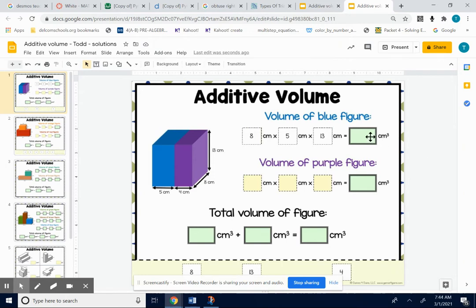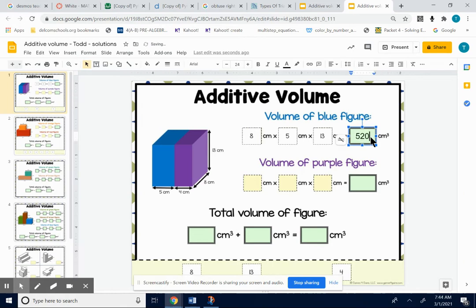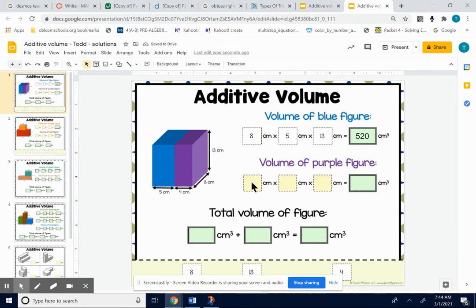And you get 520 cubic centimeters. The volume of the purple, easier to see. Easier to see all the side lengths.